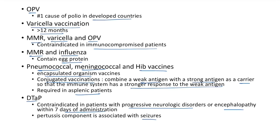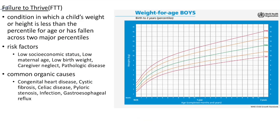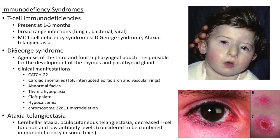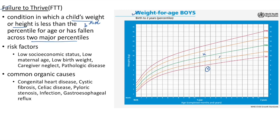Failure to thrive: a child's weight or height is less than the third percentile for age or has fallen across two major percentiles. Risk factors include low socioeconomic status, low maternal age, low birth weight, caregiver neglect, and pathological diseases. Common organic causes: congenital heart disease, cystic fibrosis, celiac disease, pyloric stenosis, infection, and gastroesophageal reflux.